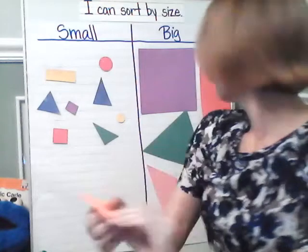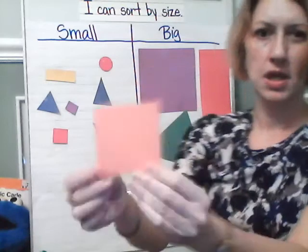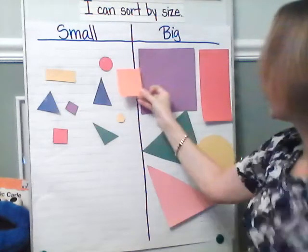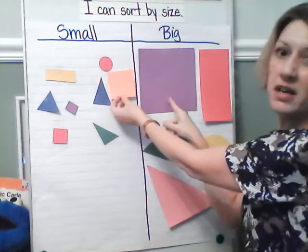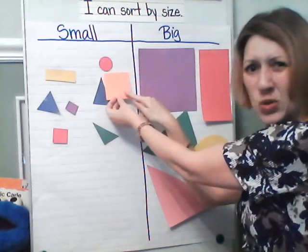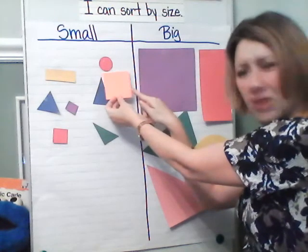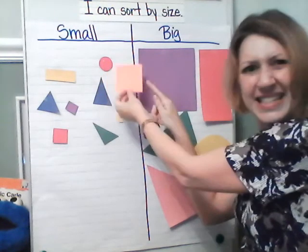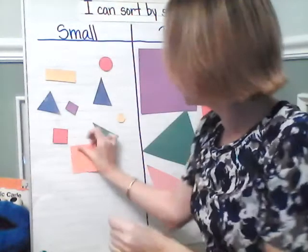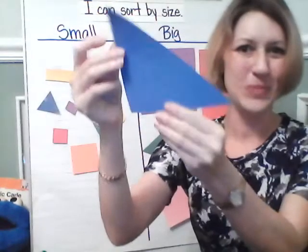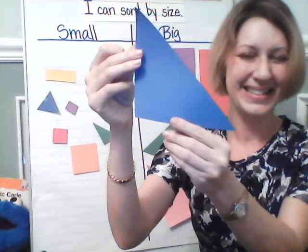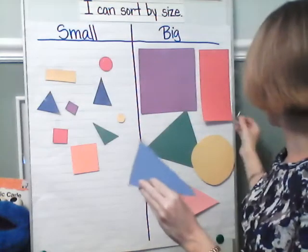What about this square? Let's compare it to some of the big squares. You see the really, really big one here? Compared to this one, is this square big or small? It does look small to me, too. Let's go ahead and add it for small. And we're almost done. What about this one? Is it small or big? It is pretty big, isn't it? Let's go ahead and add that over here to big.